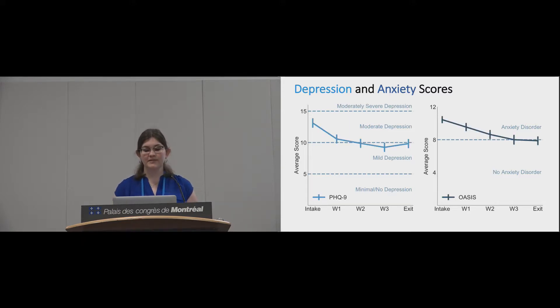We found that participants significantly improved on average on both the PHQ-9 and the OASIS. The rate of improvement did decrease, but participants continued to improve throughout the study. In fact, average scores indicated moderate depression and anxiety disorder before the study and mild depression and no anxiety disorder after the study.